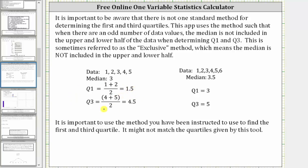Similarly, when determining Q3, we do not include three in the upper half. And therefore, the median of the upper half, which is quartile three, is the mean of four and five, which gives us 4.5.